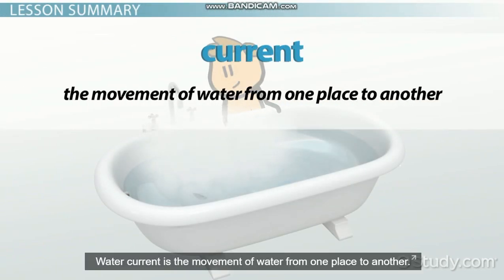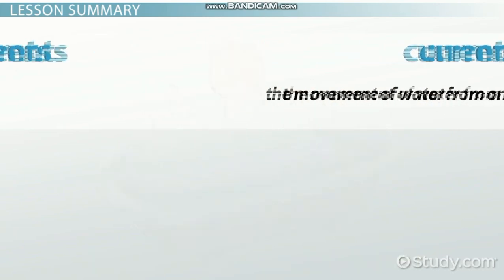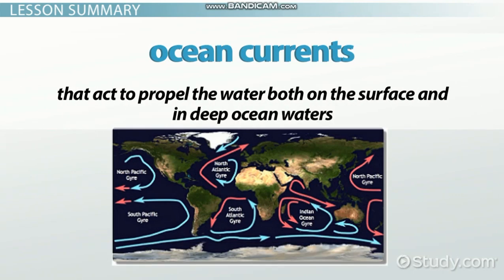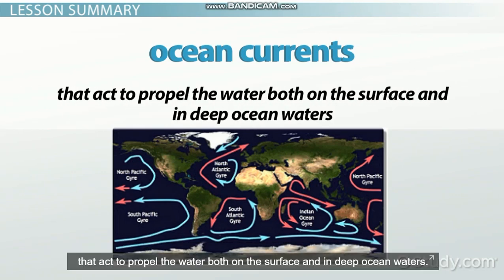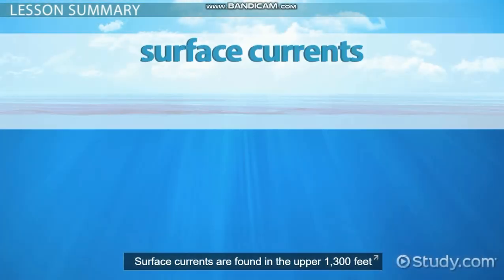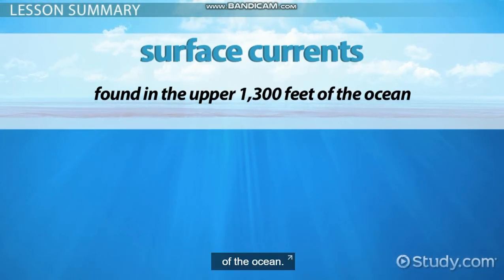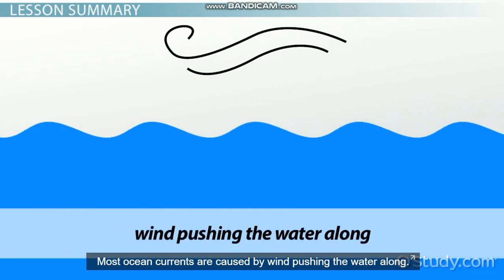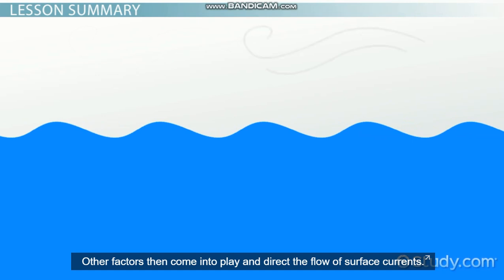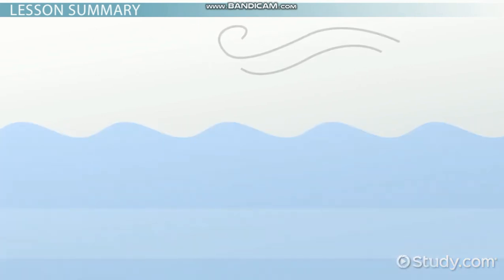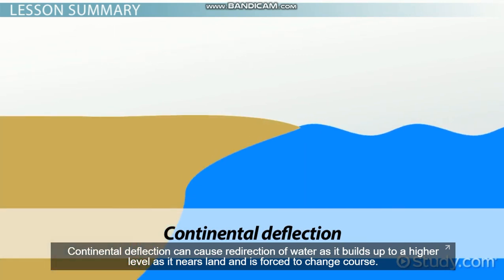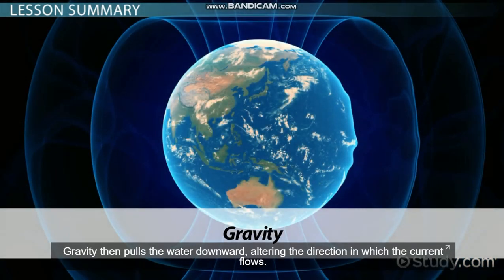Water current is the movement of water from one place to another. Ocean currents are massive currents influenced by a variety of different forces that act to propel the water both on the surface and in deep ocean waters. Surface currents are found in the upper 1,300 feet of the ocean. Most ocean currents are caused by wind pushing the water along. Continental deflection can cause redirection of water as it builds up to a higher level as it nears land and is forced to change course. Gravity then pulls the water downward, altering the direction in which the current flows.